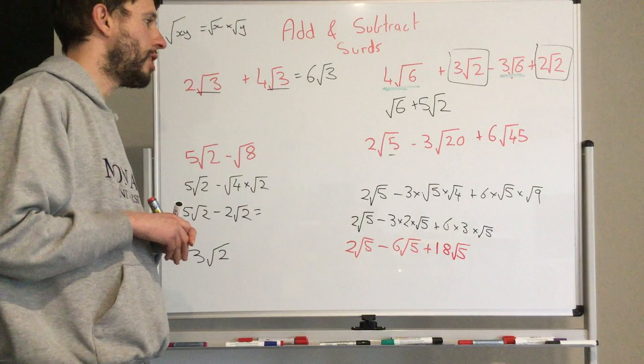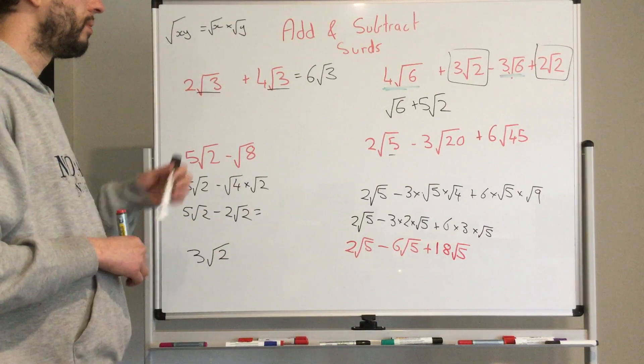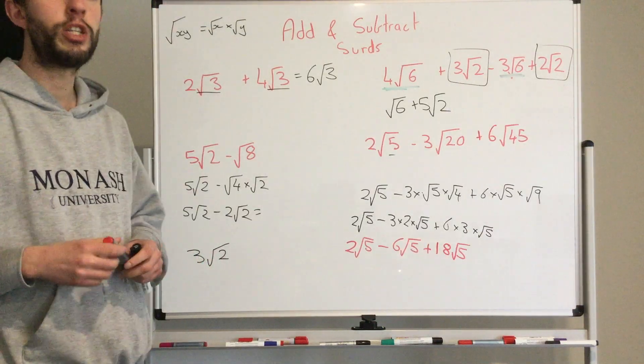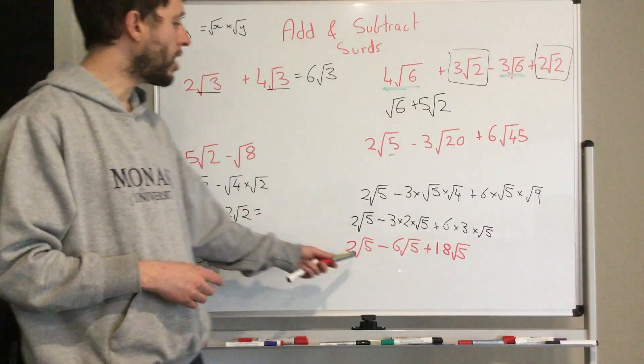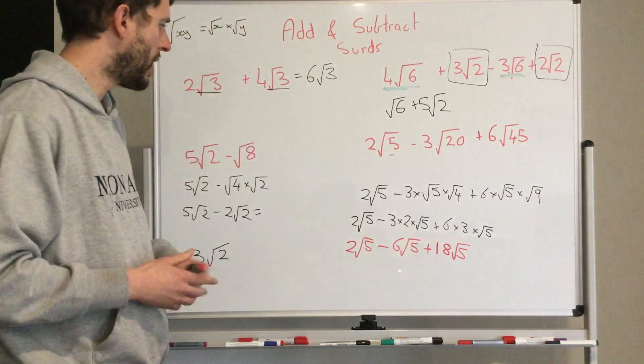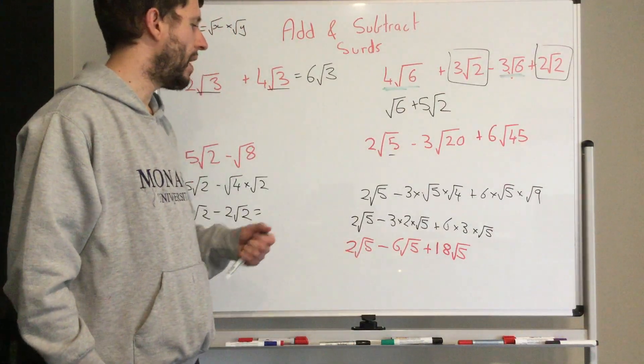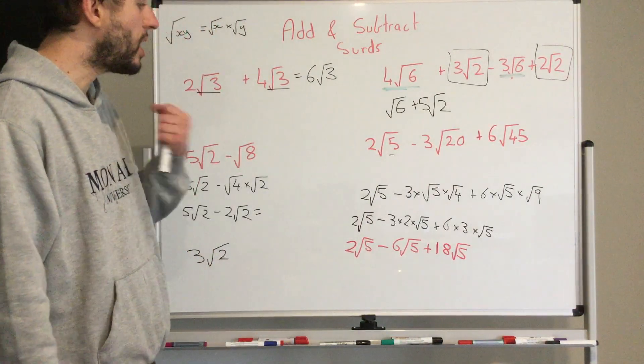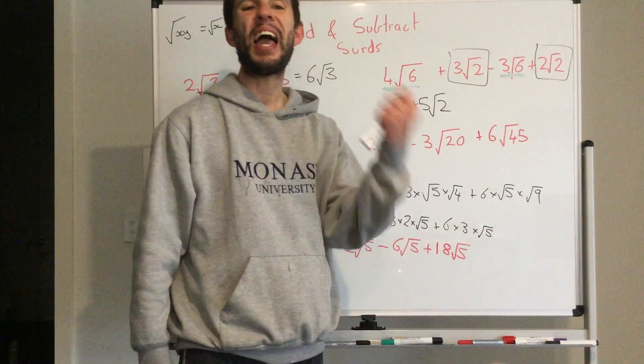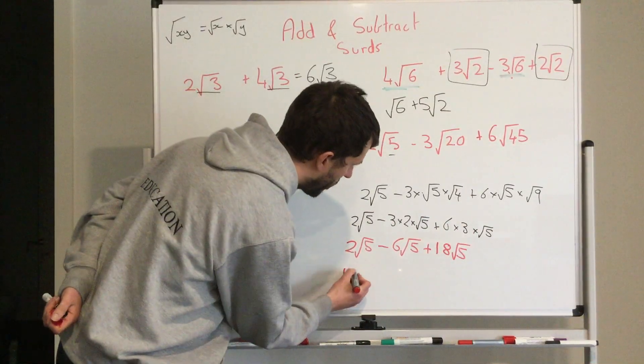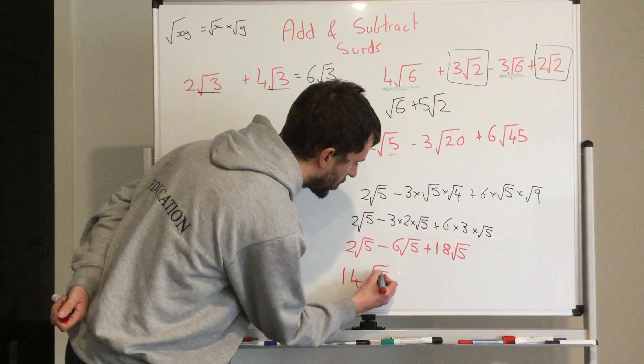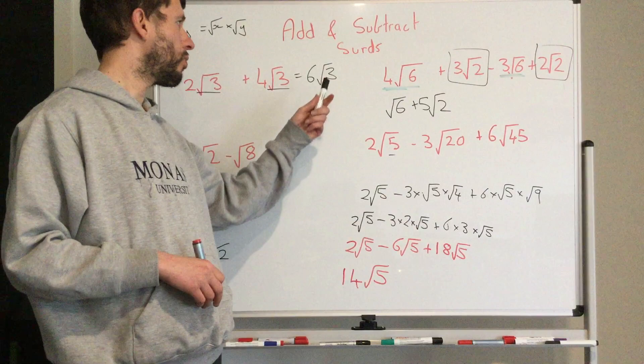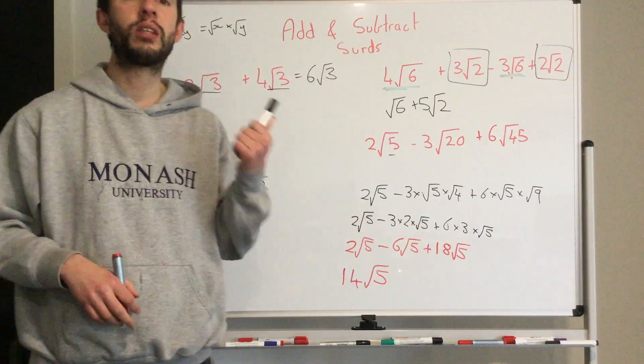And there you have it. So this is the stage that we're up to now, and now we just need to simplify. I've got the same like term. So we've got 2 lots of square root of 5, and I take 6 away. That becomes negative 4 square root of 5. If I've got negative 4, I'm adding 18. It turns into I've got 14 lots of square root 5. And there you have it. So just like algebra, when we're doing surds, we can think about it as like terms.